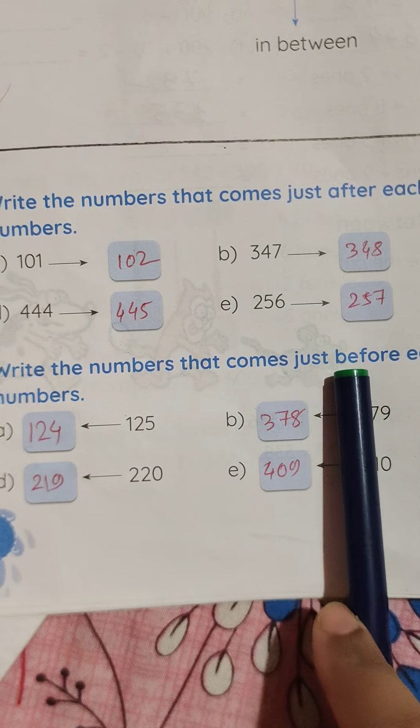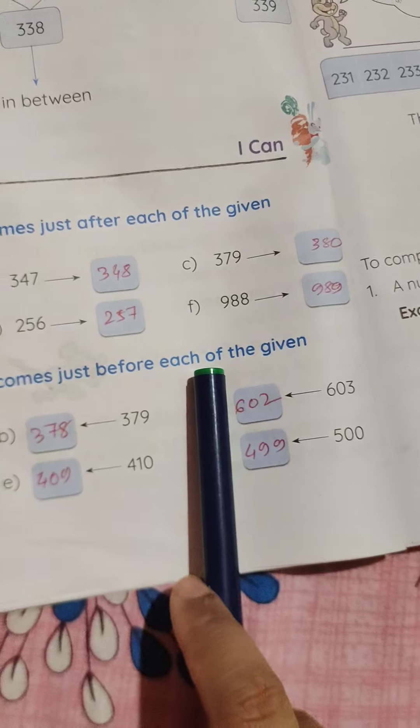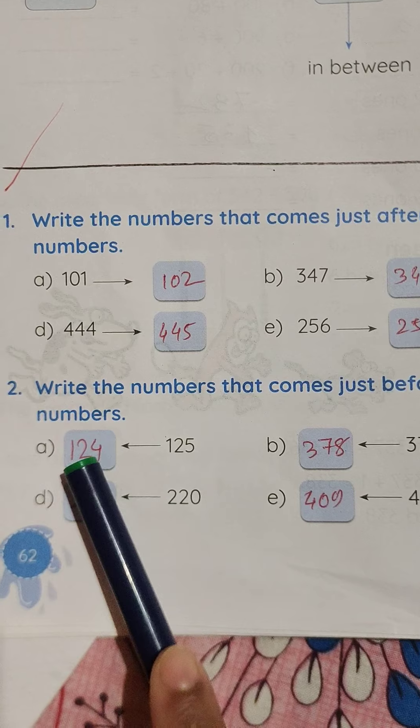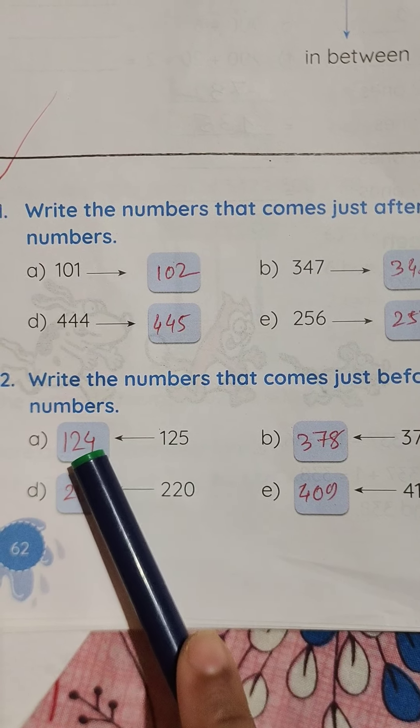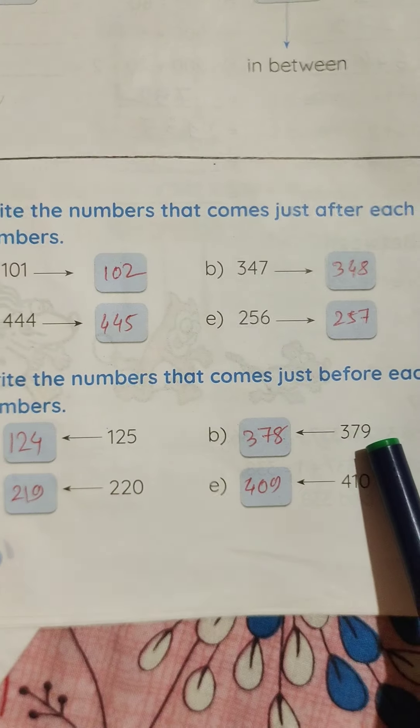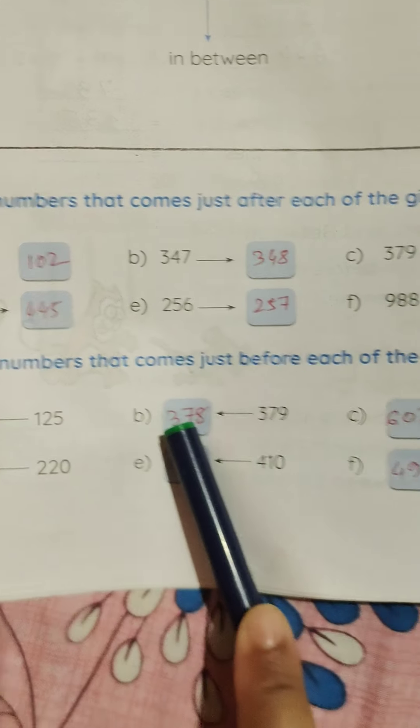Write the number that comes just before each of the given numbers. 125, before it, 124. 379, it will be 378.